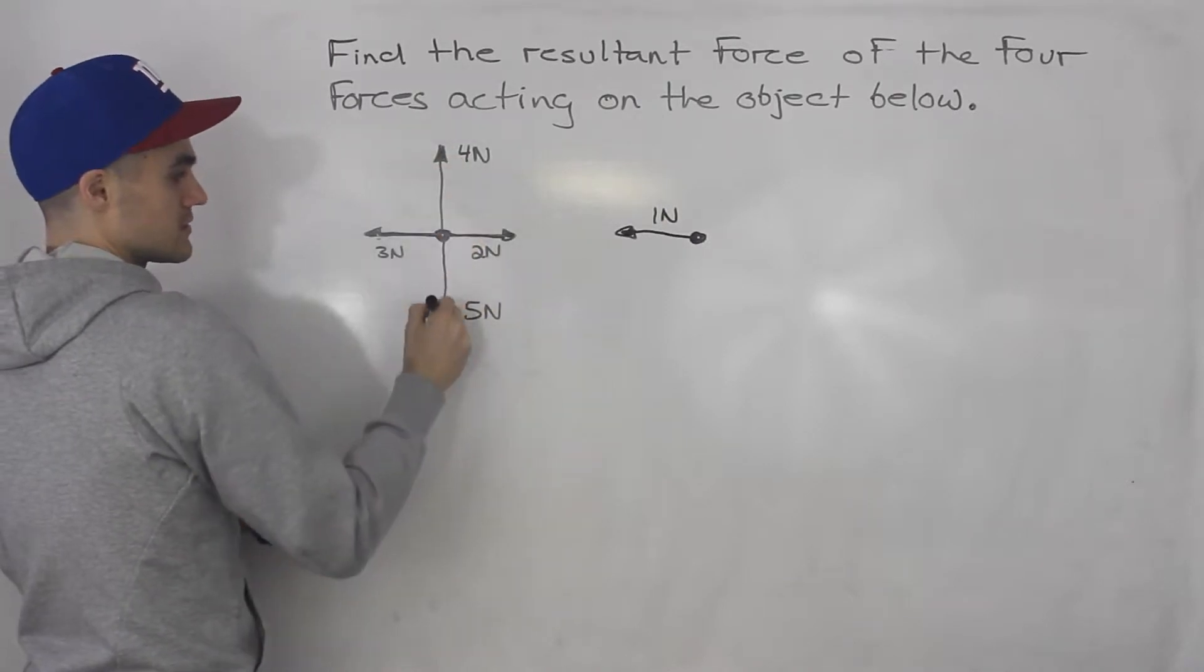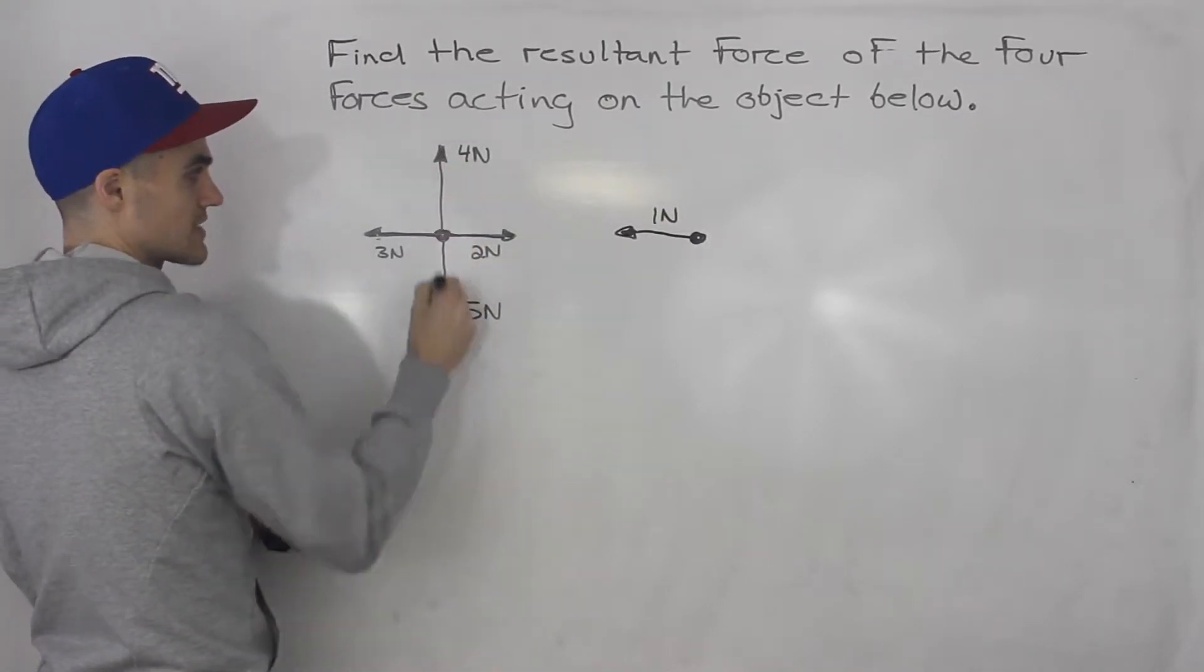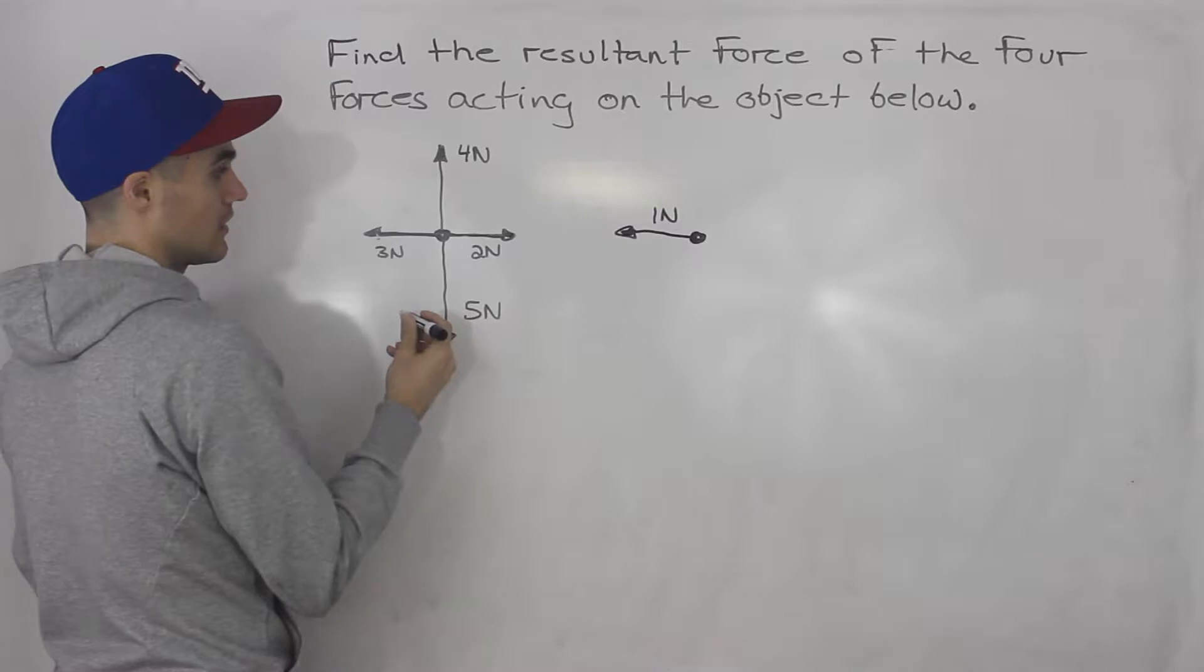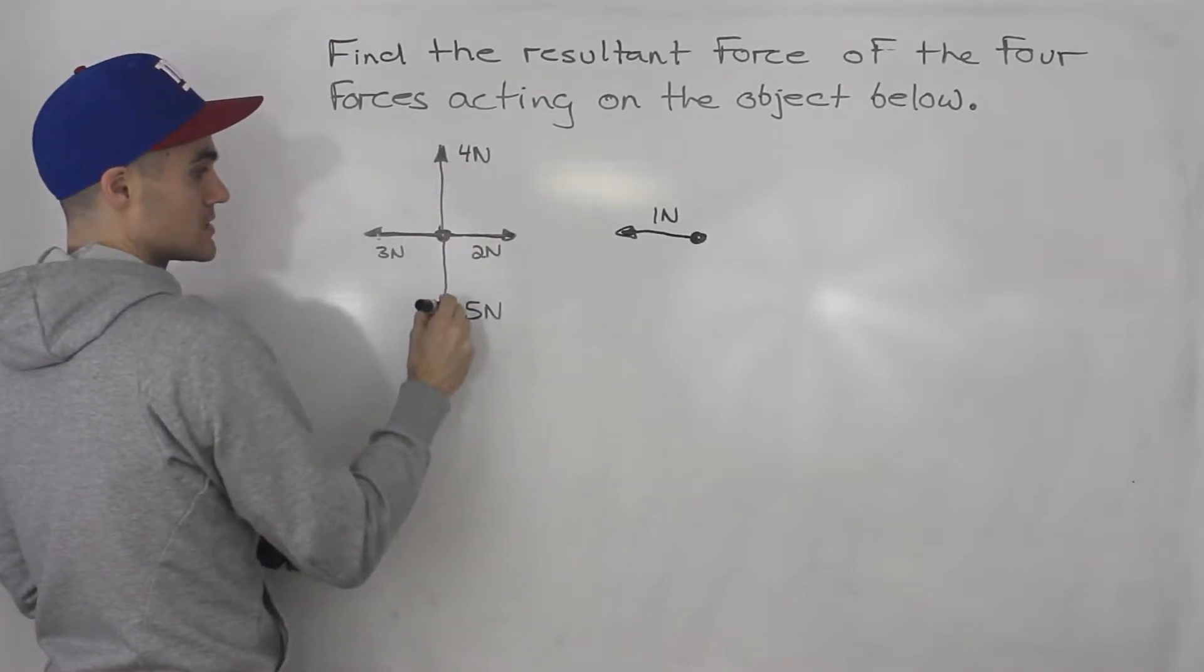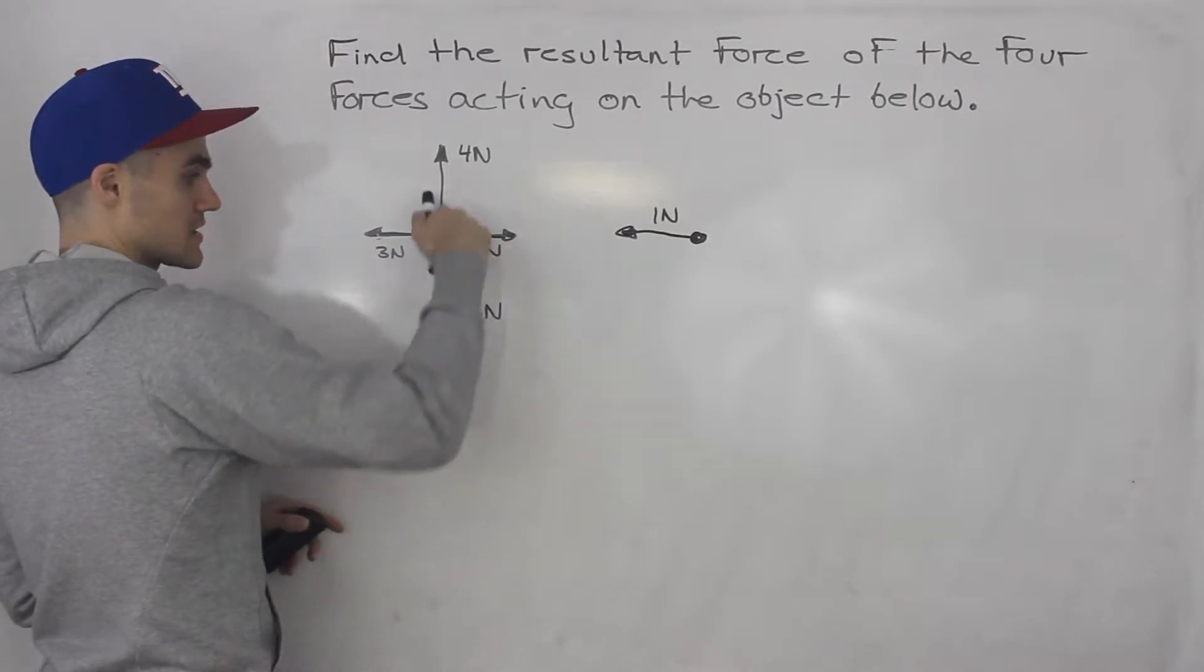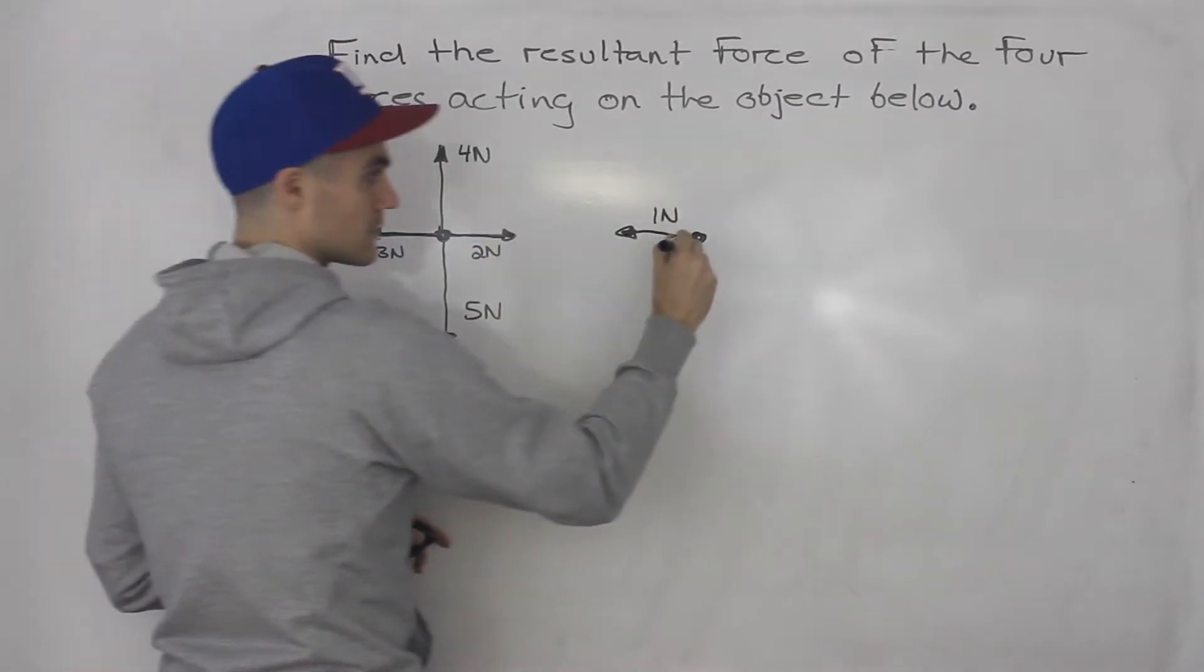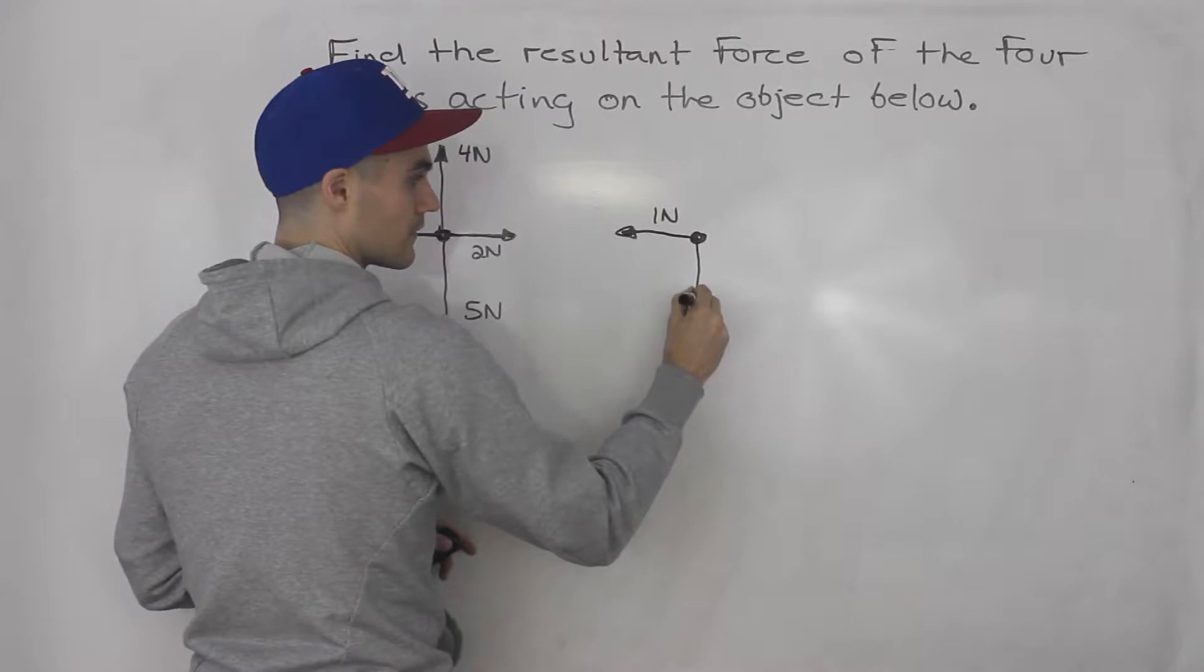Now what about these two right here? They're going in the exact opposite direction of each other. So we got four newtons this way, five newtons this way. So that means the resultant is going to be one newton this way.